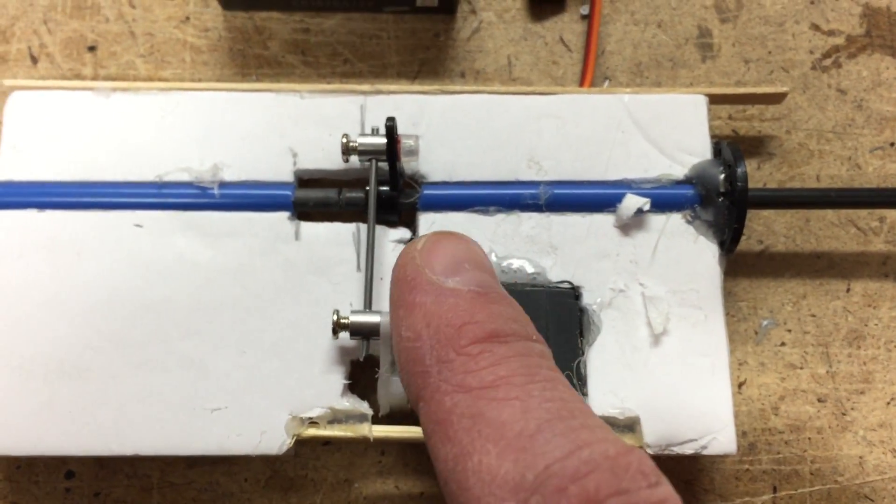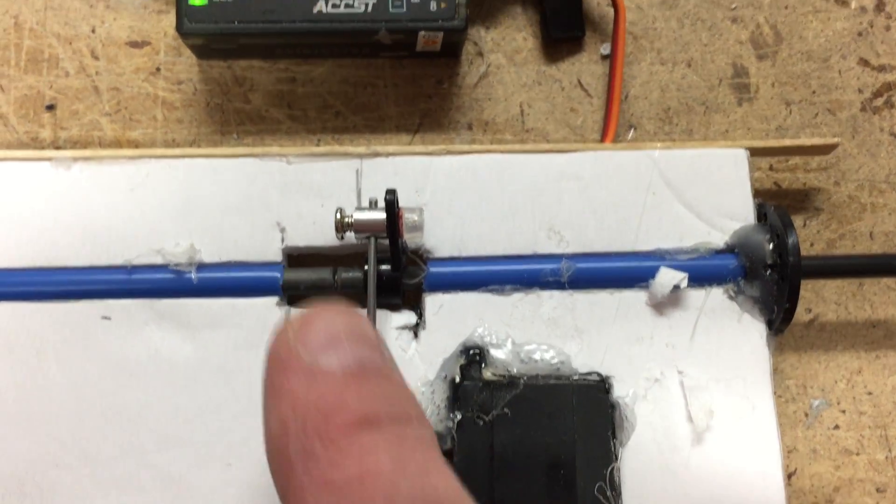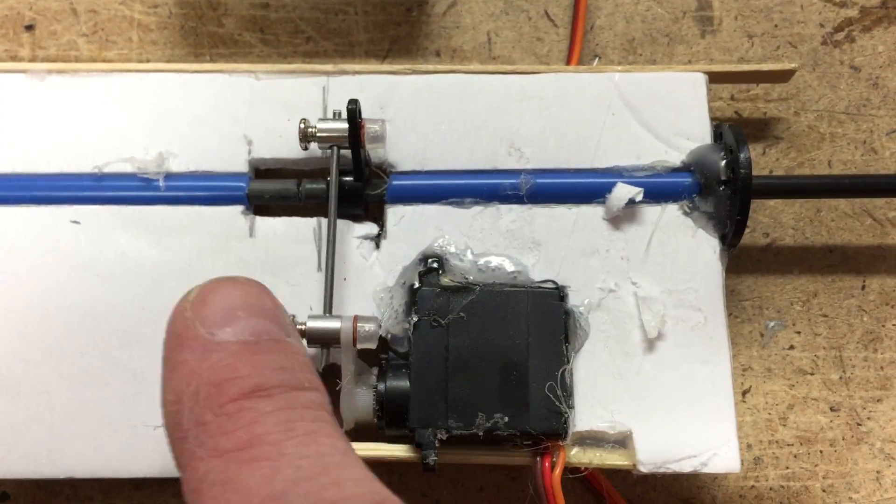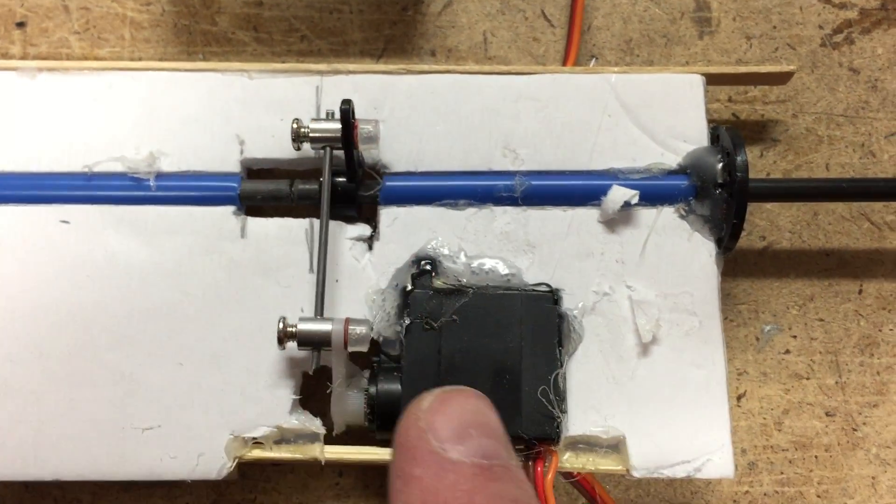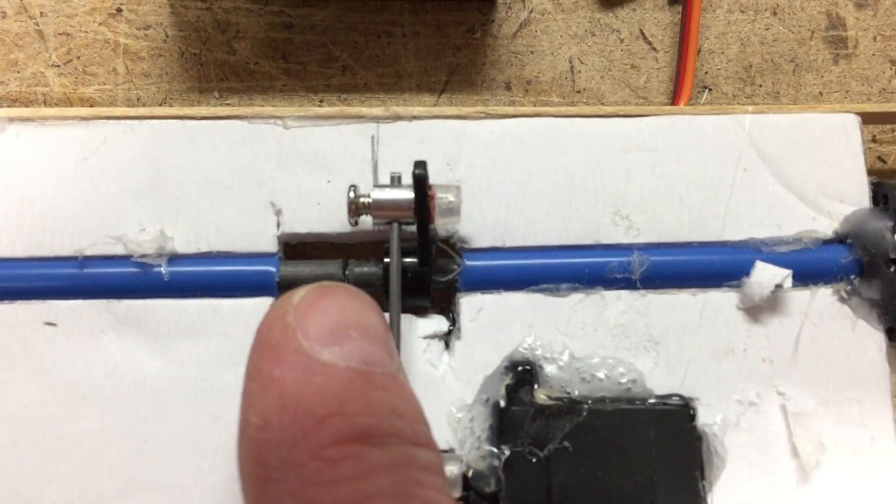Still had a tiny bit of play but what I wanted to do was have of course one servo for each of the tilting services. The servo will be moved over a little bit to the right, but if you look closely there you see there's a join.